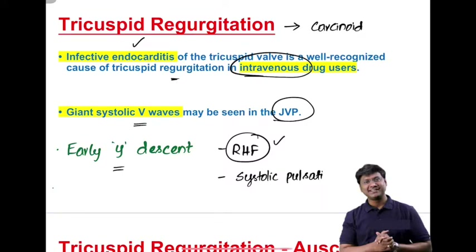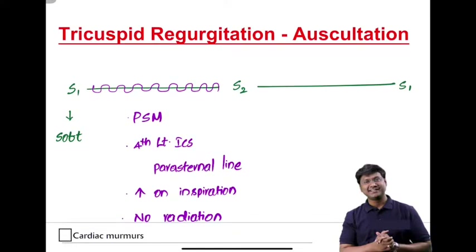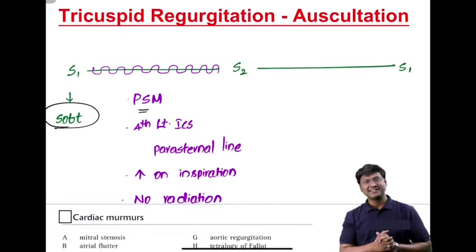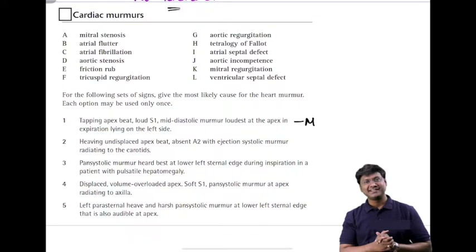Auscultatory findings in tricuspid regurgitation: S1 is soft due to soft T1. The murmur is a pan-systolic murmur heard at the fourth left intercostal space parasternal line, increasing on inspiration, with no radiation.